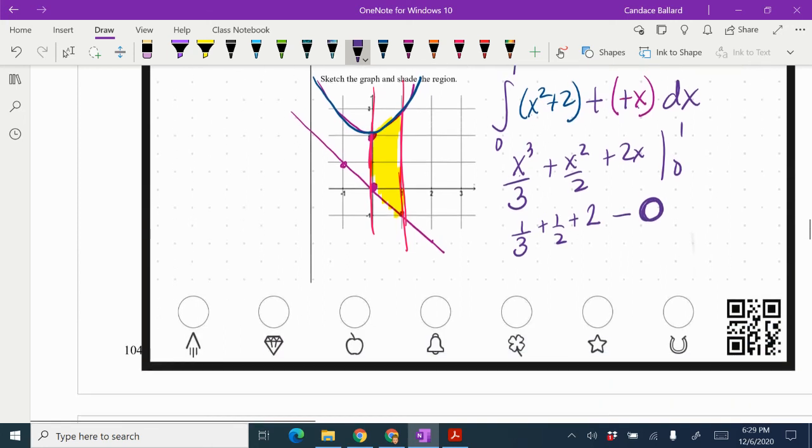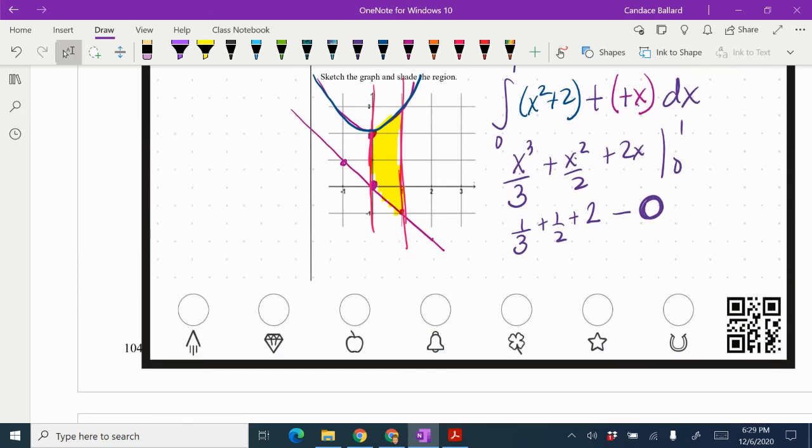Technically, if it was free response, I would be done. However, if it was multiple choice, I would probably need to keep going a little bit. So I'm going to get these into 6ths. So 1 third is the same as 2 sixths. 1 half is the same as 3 sixths. And 2 would be the same as 12 sixths. So when I add those up, 2 plus 3 plus 12 would be 17 sixths.